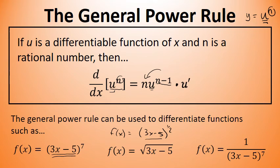And a last example is f of x equals 1 over 3x minus 5 to the seventh power, which again would have to be rewritten this time as 3x minus 5 to the negative seventh power. And then the general power rule could be applied.